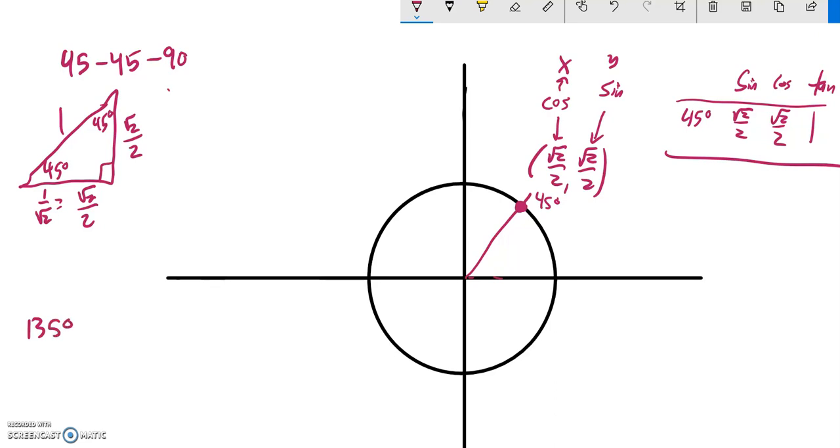For example, what if I wanted to find sine of 135, cosine of 135 degrees? 135 degrees looks like this. I don't have a right triangle. I don't have a hypotenuse, because I don't have a right angle. This whole right triangle thing starts to fall apart a little bit.